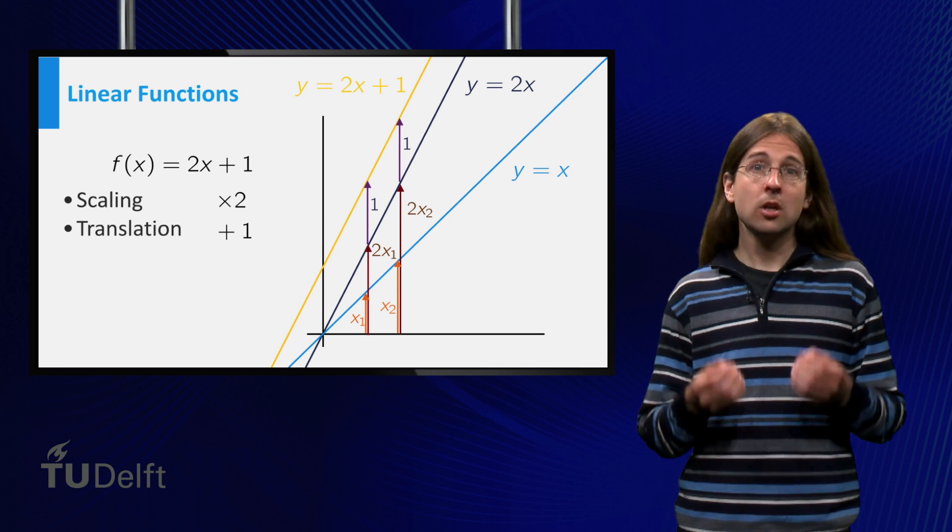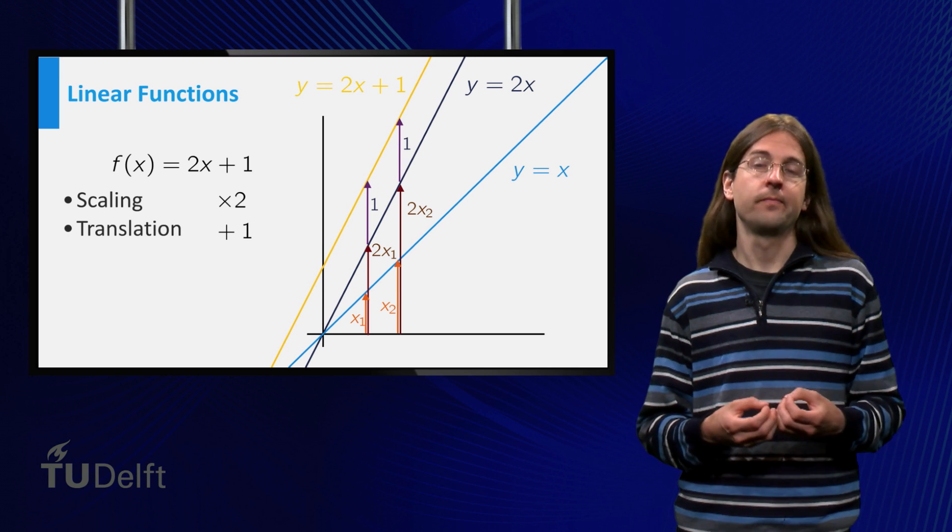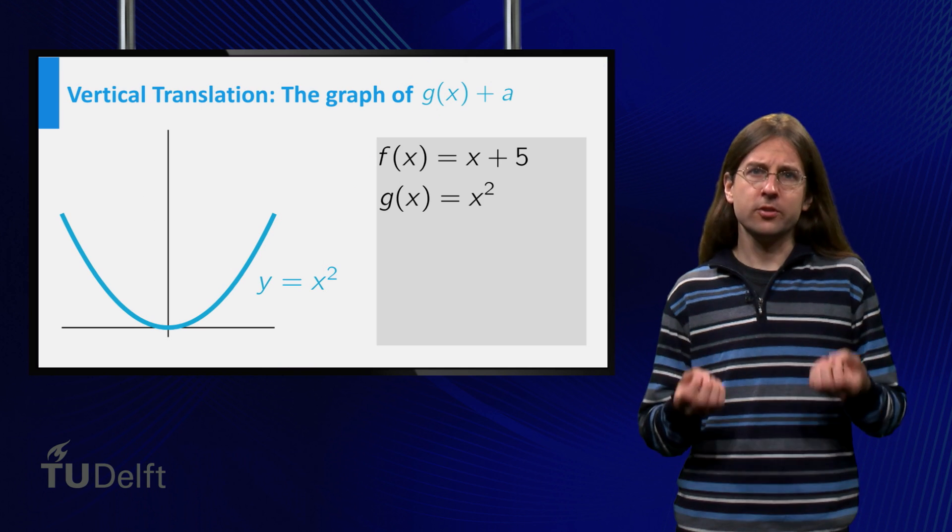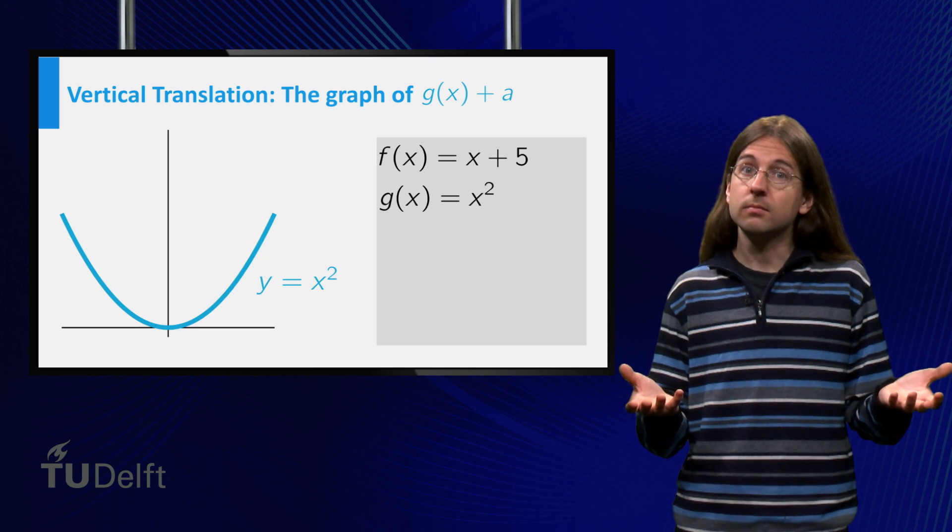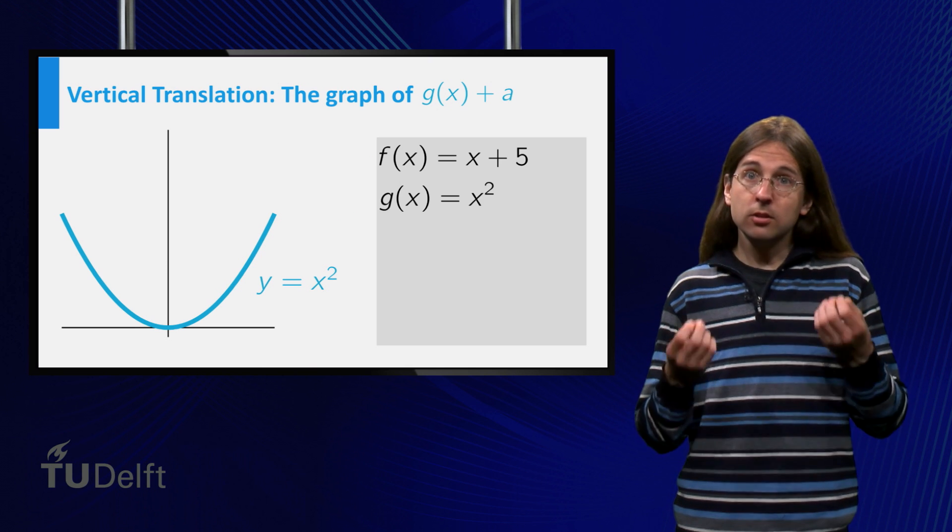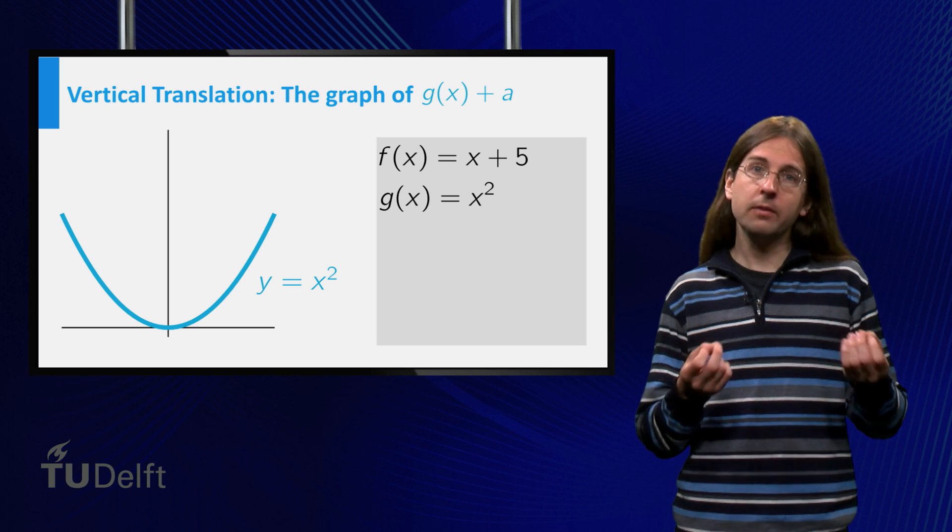First we will consider only the translation. What happens to the graph of a function if you compose it with f equals x plus 5? We consider the composition of g equals x squared with f.